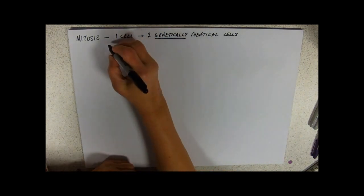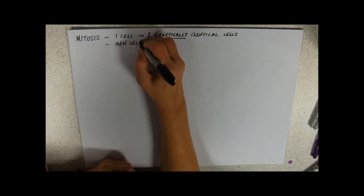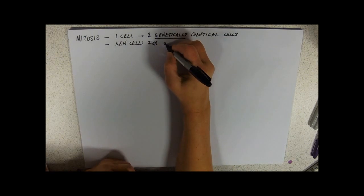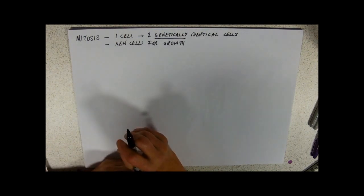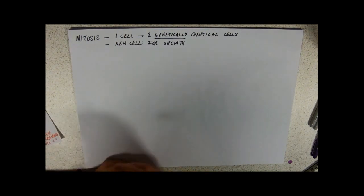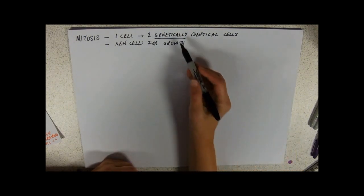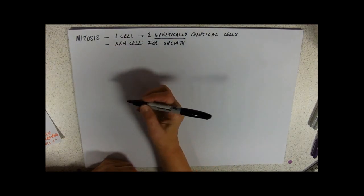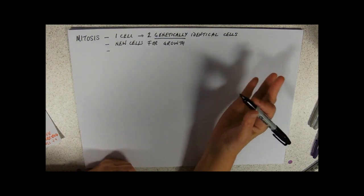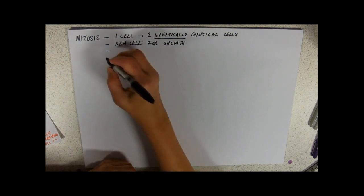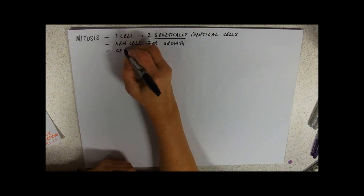So why do we need to do mitosis? Well, we need to do it to make new cells for growth. You started off as one cell when your mom and dad's gametes fused, and then you've got millions of cells, and they all need to have the same genetic information inside them. You also need to replace cells that die and get damaged and destroyed. We call that process cell renewal.